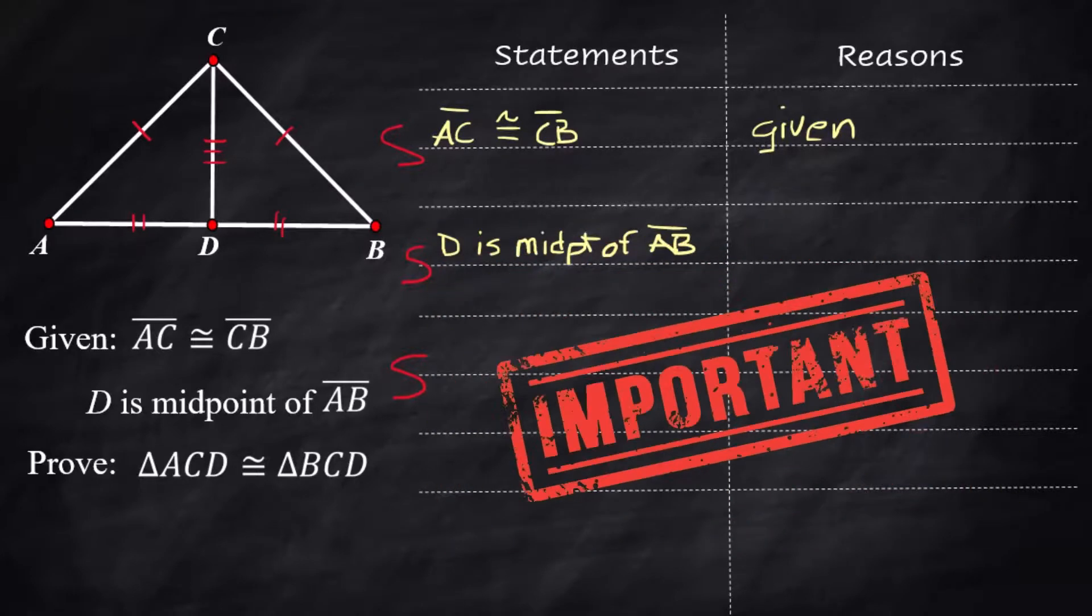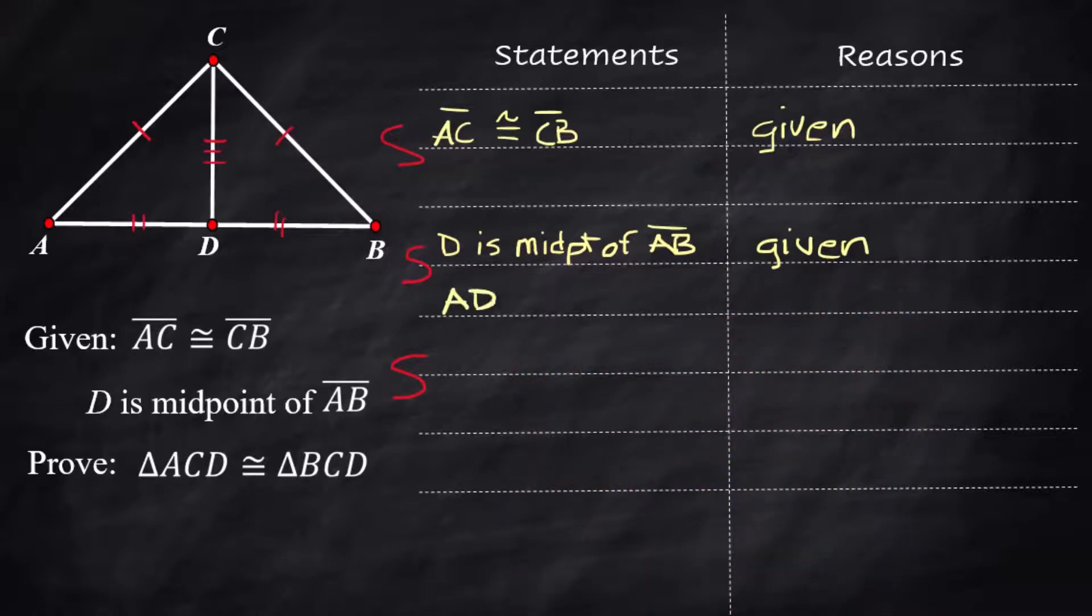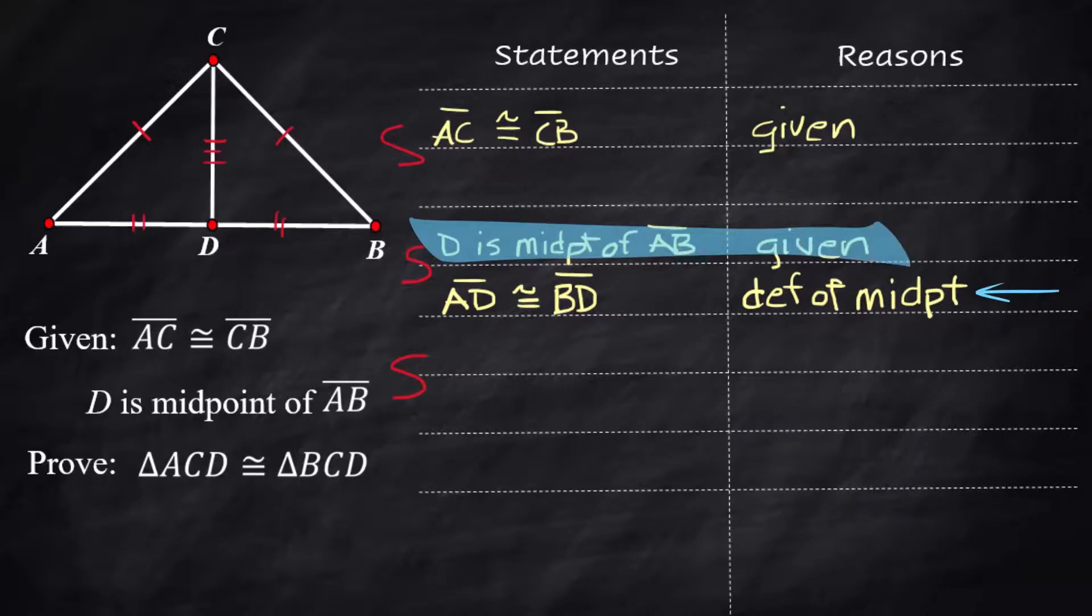It has to be stated, it has to be written down before you can use what it means and that's the next line that AD is congruent to BD and the reason is that is the definition of midpoint. Because you want to use the definition of midpoint you have to have the midpoint listed in the proof before that.